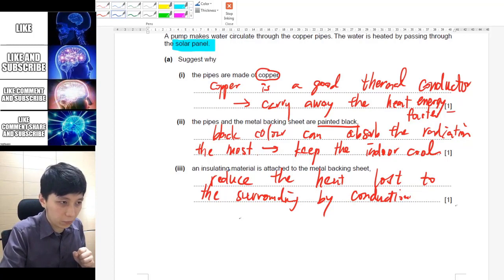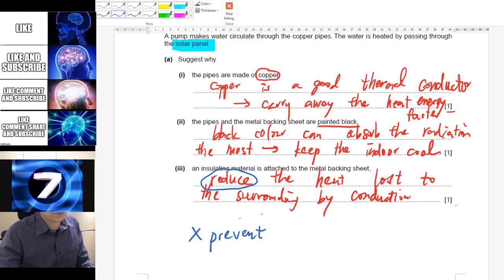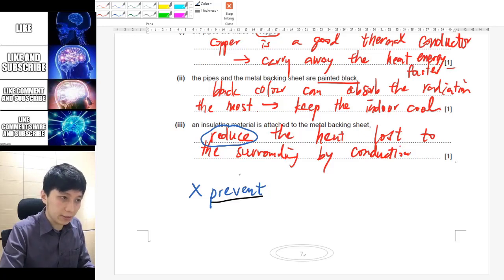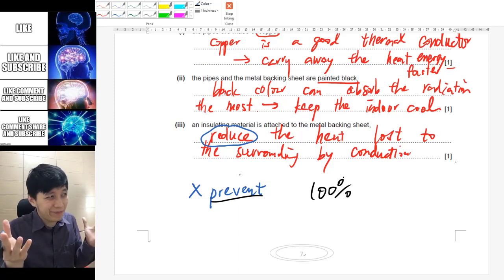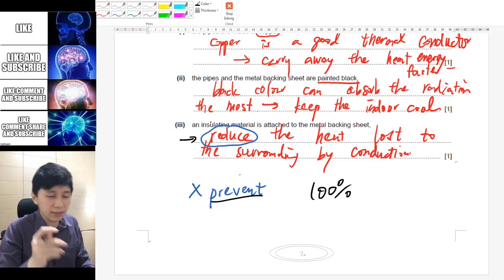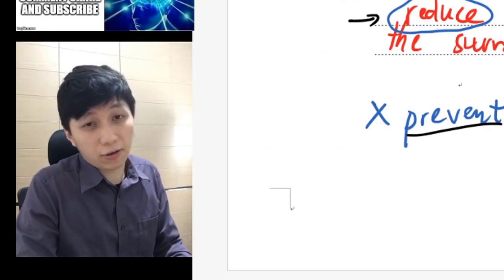One thing to remind you is that the word reduce is very important and you should not confuse that with prevent. Think about why. The reason is that when you say prevent, it means 100 percent, and in the world there isn't really anything that's 100 percent. So you can only reduce the amount, but not like reducing 100 percent of the heat lost, just like you think that you will eventually find your true love in your lifetime.